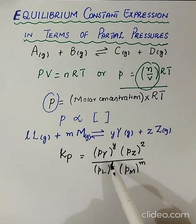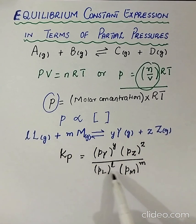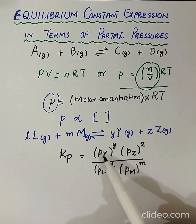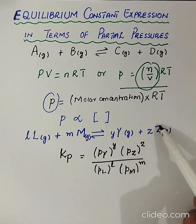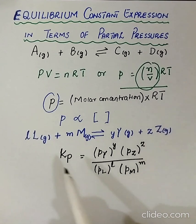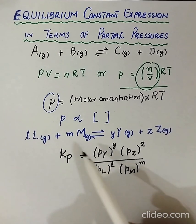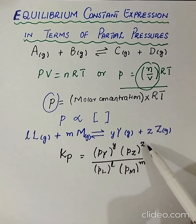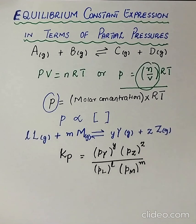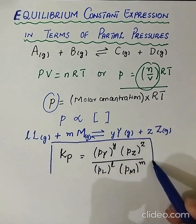In this expression we relate our products and reactants in terms of partial pressure, where Pz is the partial pressure of product Z, Pn is the partial pressure of L, and Pm is the partial pressure of M. All the moles are written in the form of superscripts, as we did earlier in terms of equilibrium constant. This is the equilibrium constant expression when all the reactants and products are in gaseous phase.